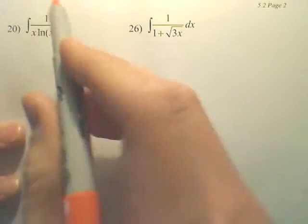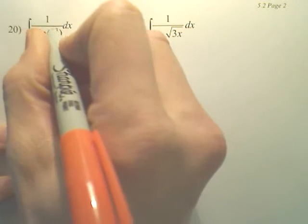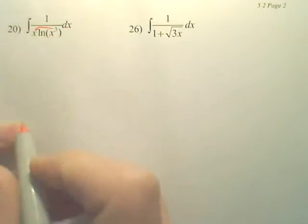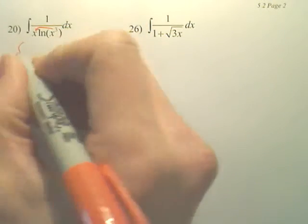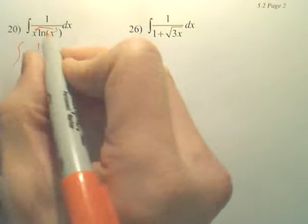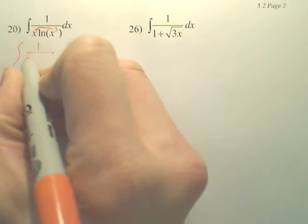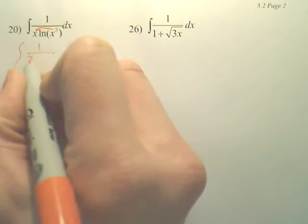For number 20 here, to integrate this, the first thing I want to do is take this little three and send it off the edge. Because I can and I will. Now, the three can go out front, so I can multiply it by the x, so I get 3x.